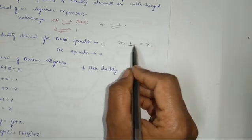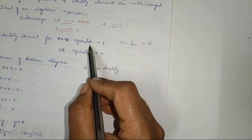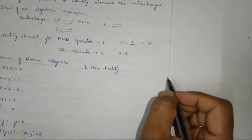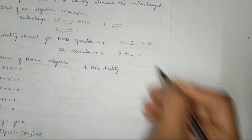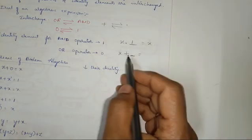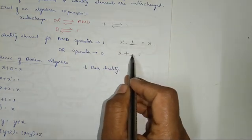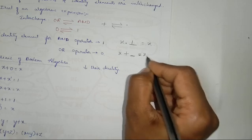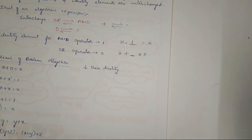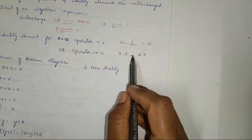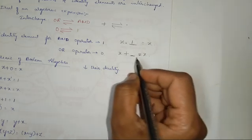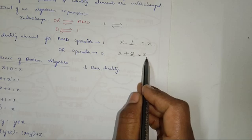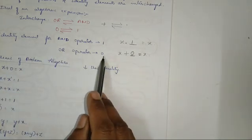Similarly for OR operator, I am taking one variable. You have to do the OR operation of some element with the variable such that the output must be X itself. What is that value? If I take X plus 1, it won't be X, it will be 1. If I OR 0 with X, the output will be X. So the identity element for OR operation is 0. I guess you understood this concept.